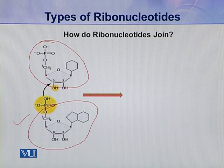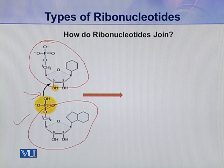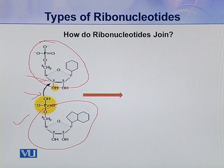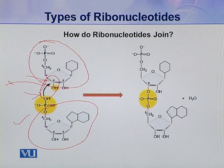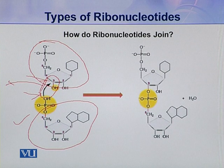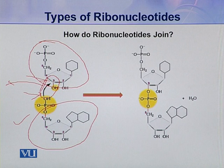The hydroxyl group present in this phosphoric acid attacks the hydroxyl group present on the pentose of the next ribonucleotide. So in this way, a condensation reaction takes place — a water molecule is removed — and here you can see these two ribonucleotides join together and they make a dinucleotide.